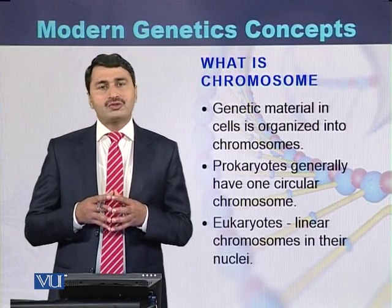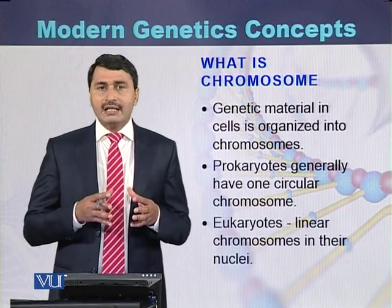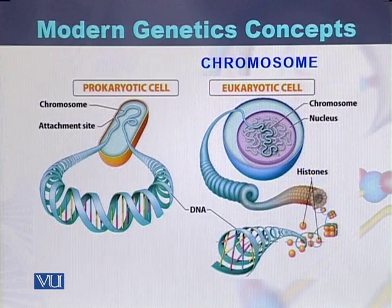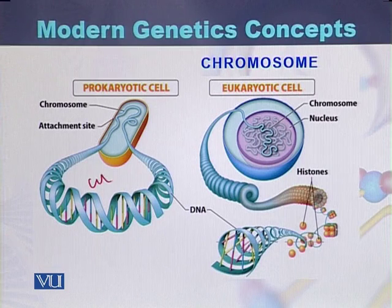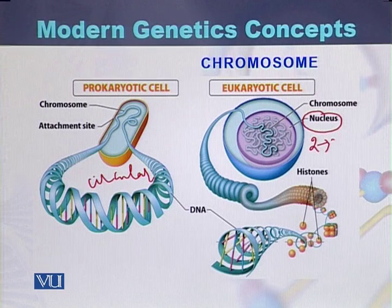The number of chromosomes varies in different species. In some species the number can be 2, and in some species the number extends up to 300. Here is a diagram explaining the structures of chromosomes. In the prokaryotic cell there is a single circular chromosome, while in the eukaryotic cell within the nucleus there are multiple chromosomes, ranging from 2 up to 300 in certain species.